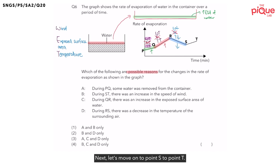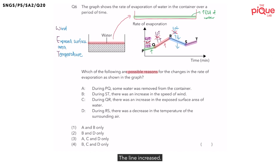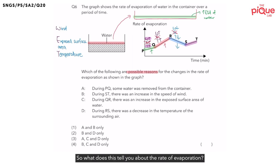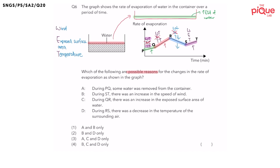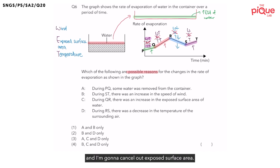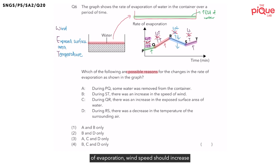Next, let's move on to point S to point T. Did the line increase or decrease? The line increased, so the rate of evaporation increased. I write down the factors on top and cancel out exposed surface area. To increase the rate of evaporation, wind speed should increase and temperature should increase as well.